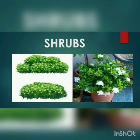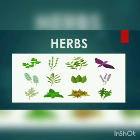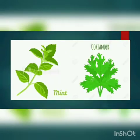Number 2, shrubs. Small plants with hard, thin and bushy stems are called shrubs, like chilli plant and rose plant. Number 3, herbs. Very small plants with soft stems are called herbs, like mint, coriander etc.